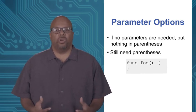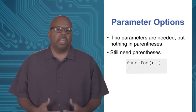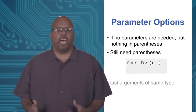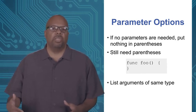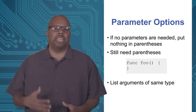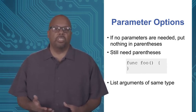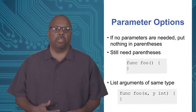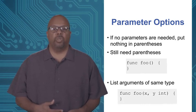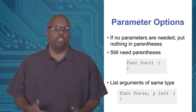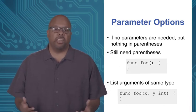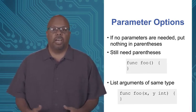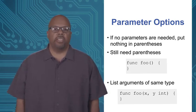Another shorthand: when you have multiple arguments of the same type, you can comma-separate them. You don't have to write int, int, int over and over. In the case where foo has two arguments, x and y, both ints, you could write x int comma y int, or just write x, y int. It's just another way to write it.